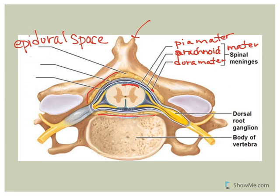The epidural space also contains blood vessels and some loose connective tissue. This is the site where, if someone has had an epidural, anesthesia is injected — right in here into the epidural space, because of those large blood vessels in the area.